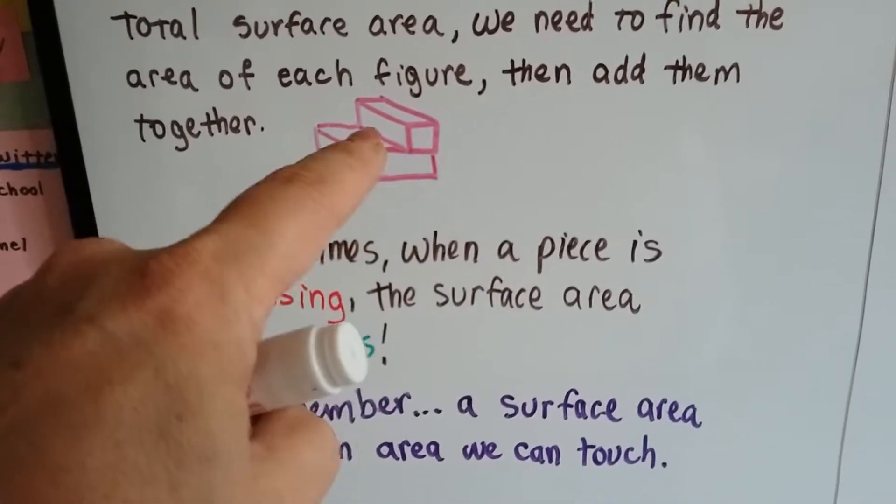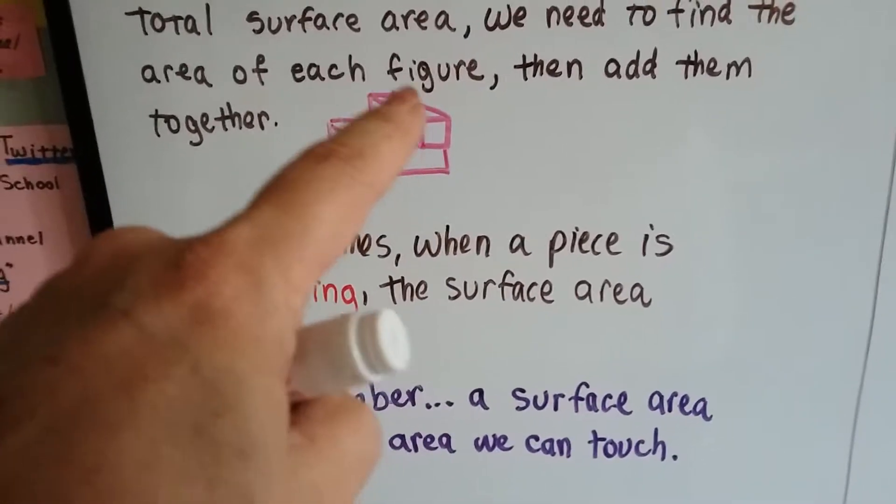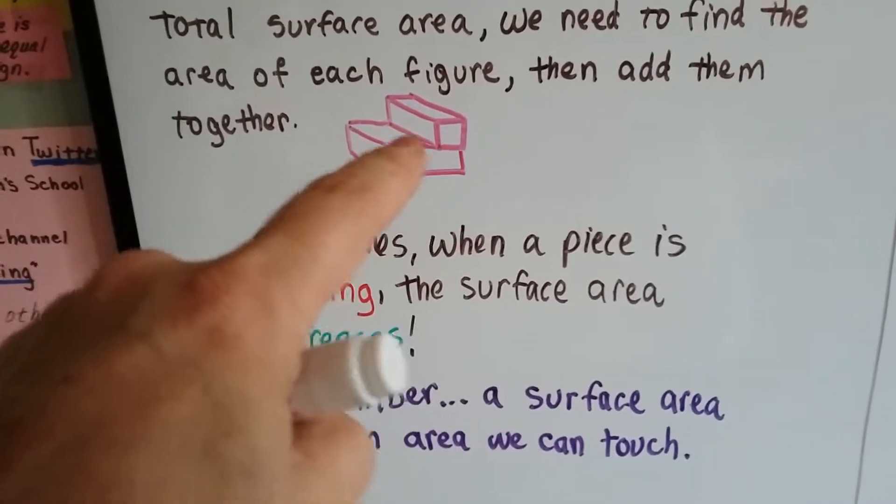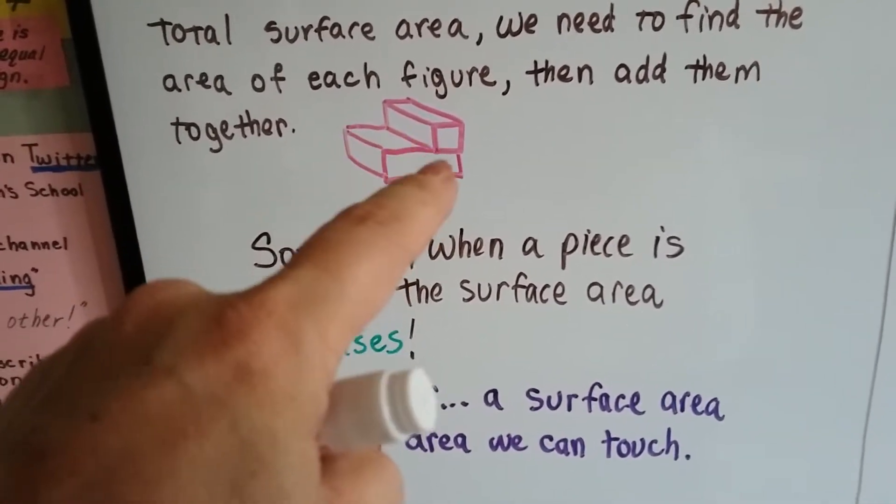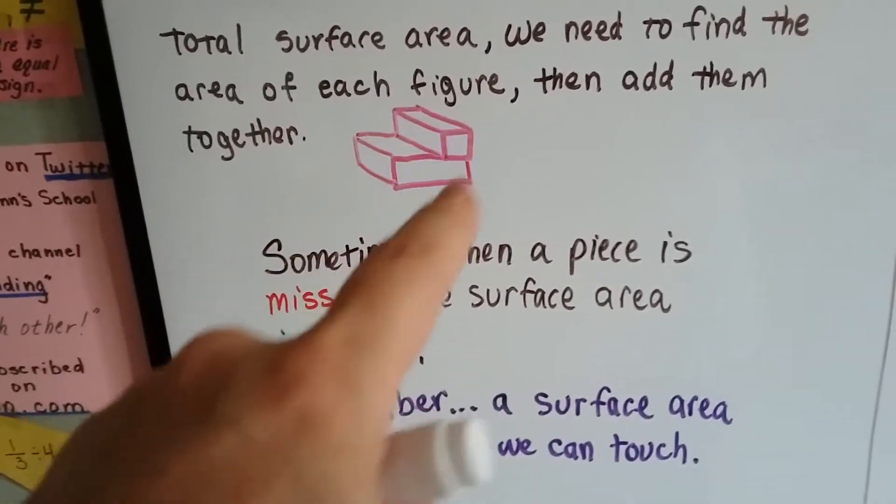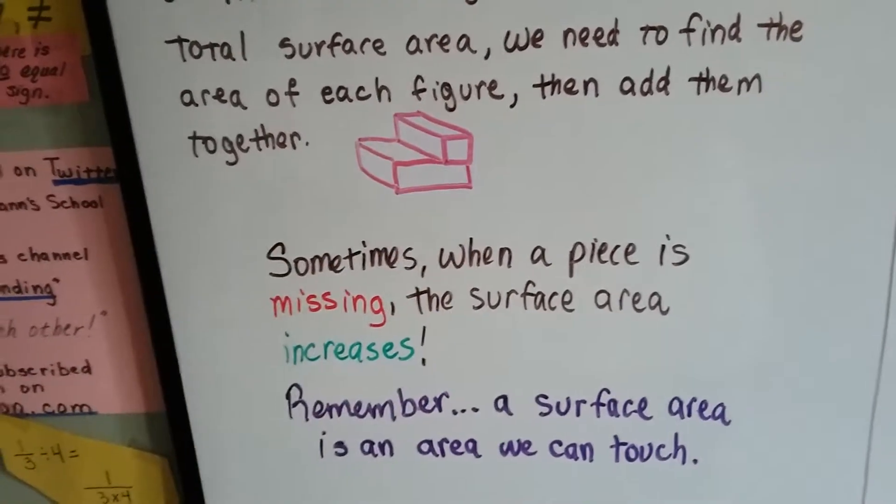So we would have to remove one of the bases for this long one that looks like a stick of butter, and we'd have to remove the top part that's underneath that long stick of butter shape. Those would both have to be removed if we did these as two rectangular prisms.